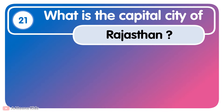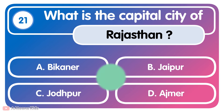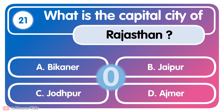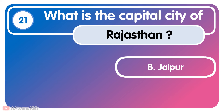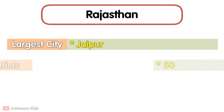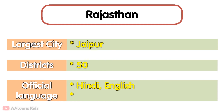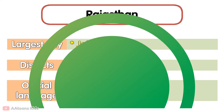What is the capital city of Rajasthan? The largest city in Rajasthan is Jaipur. It has a total of 50 districts. Its official languages are Hindi and English. Jaipur is known as the Pink City.